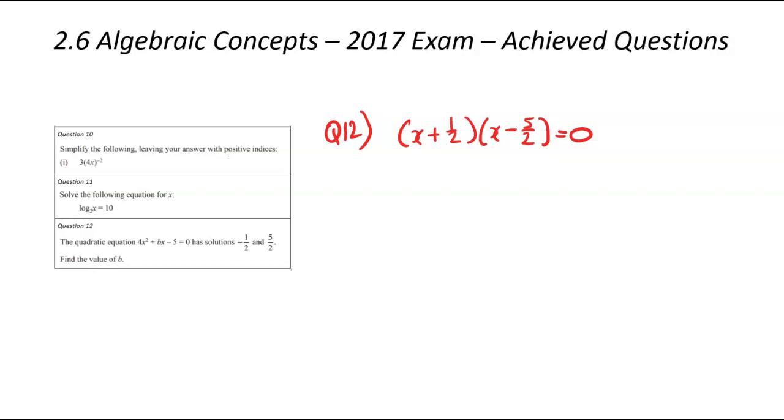We're now going to have the issue: when we expand this bracket, we get x times x. That's going to get us to x squared, but our equation is 4x squared. What I'm going to do is times this side by 4 to make sure I end up with 4x squared. And because we've got an equation, I've got to do this on the other side as well. So that's going to be 4 times x plus 1 half, and then x minus 5 over 2 equals 0. I'm now going to expand the first portion of the bracket.